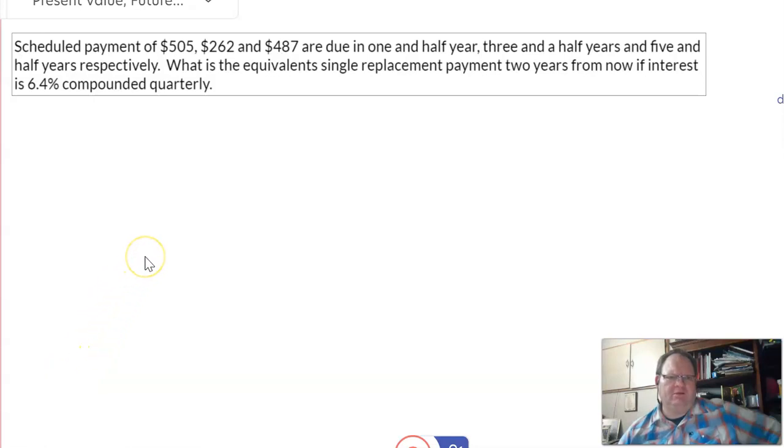I love this type of problem. It requires the use of the present value and the future value, and the idea that you can't just add the $505, $262, and $487 to get it. All your money has to be exactly at the same time.